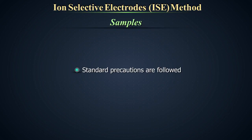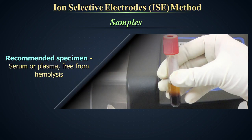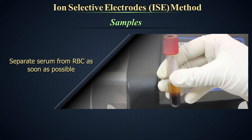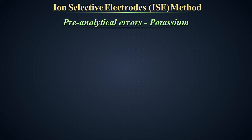Samples. All standard precautions need to be followed while handling samples. Serum or plasma free from hemolysis is the recommended specimen. Separate serum from red blood cells as soon as possible. Pre-analytical errors can occur due to the following reasons.